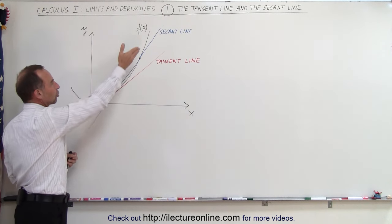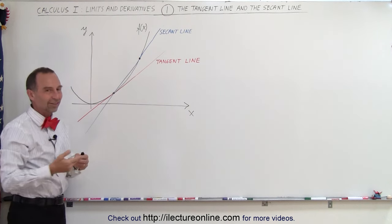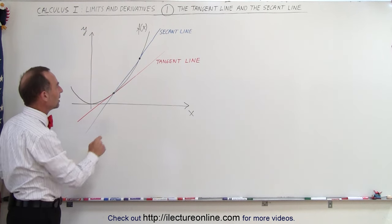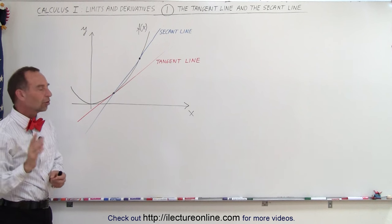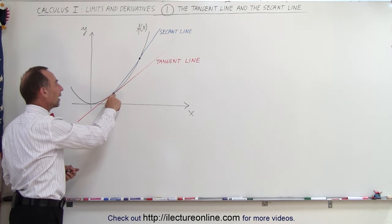In other words, the secant line cuts across a function, of course that is in a graphical sense, so to speak. So it touches the function in two places. A tangent line only touches it at one single point right here.